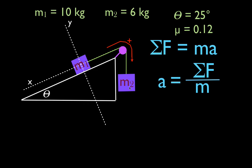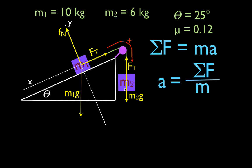I draw in my x and y-axis for M1 and then draw in the forces. M1g points down, M2g points down. The tension on M1 points up the ramp in its positive direction, and the tension on M2 points up in the negative direction. M1 is not falling through the incline plane, so there must be a normal force acting perpendicular to it. The last force is friction. Since M1 is moving up, friction always opposes motion, so the friction force points down the incline plane.